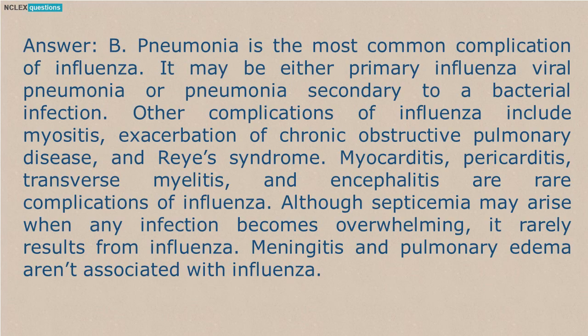Answer B. Pneumonia is the most common complication of influenza. It may be either primary influenza viral pneumonia or pneumonia secondary to a bacterial infection. Other complications of influenza include myositis, exacerbation of chronic obstructive pulmonary disease, and Reye's syndrome. Myocarditis, pericarditis, transverse myelitis, and encephalitis are rare complications of influenza. Although septicemia may arise when any infection becomes overwhelming, it rarely results from influenza. Meningitis and pulmonary edema aren't associated with influenza.